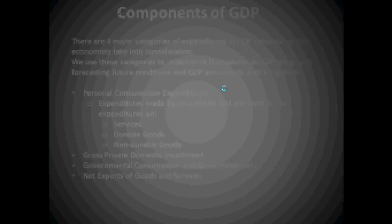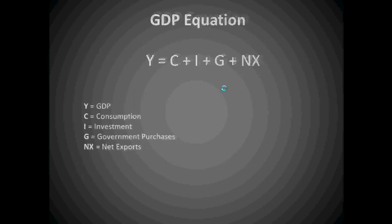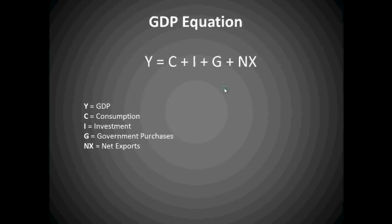The GDP equation would be Y equals C plus I plus G plus NX, which uses those four key areas in the equation. Y equals gross domestic product, C equals consumption, I equals investment, G equals government purchases, and NX stands for net exports.